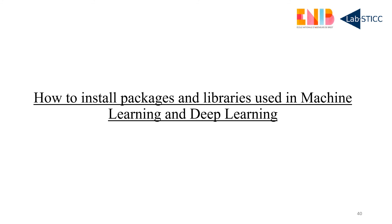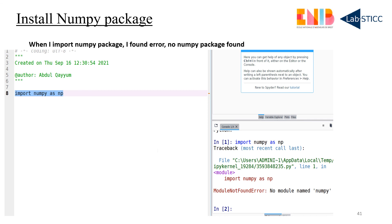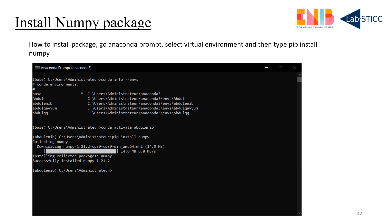Now I will show you a basic example of how to install packages and libraries for machine learning and deep learning. I want to check whether NumPy is installed. I type 'import numpy as np' and run this code. I see the error: 'No module named numpy', which means this package is not installed in the current virtual environment. To install it: go to Anaconda Prompt, type conda info --envs to check environments, then activate your target environment.